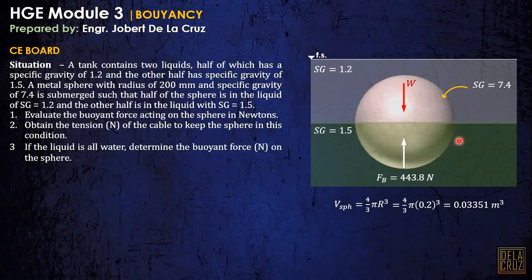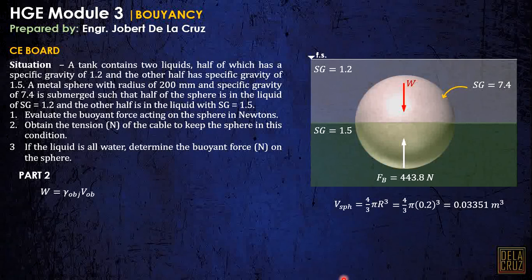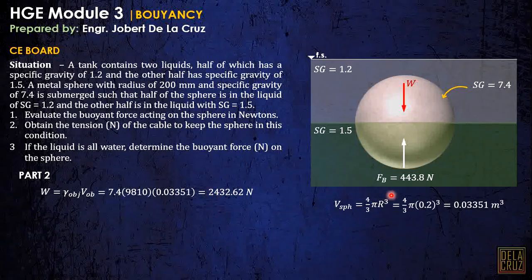The total buoyant force is summarized here. Now, calculate the total weight of the object: gamma times volume of the object. Using the specific gravity, substitute the values. As you can see, the weight is very much bigger than the buoyant force.